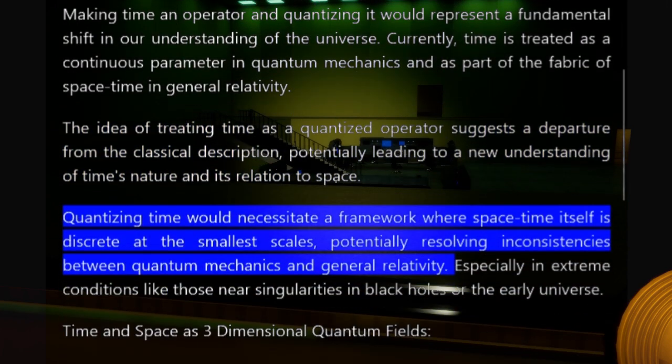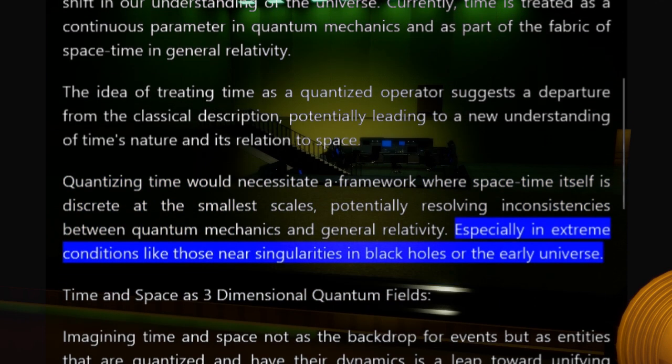Quantizing time would necessitate a framework where space-time itself is discrete at the smallest scales, potentially resolving inconsistencies between quantum mechanics and general relativity, especially in extreme conditions like those near singularities in black holes or the early universe.